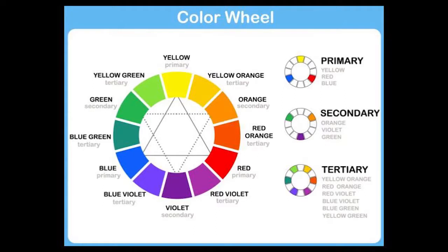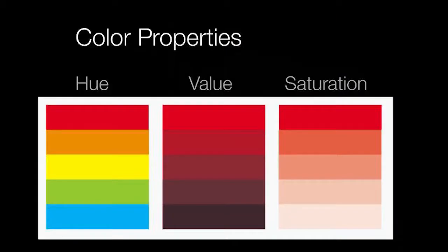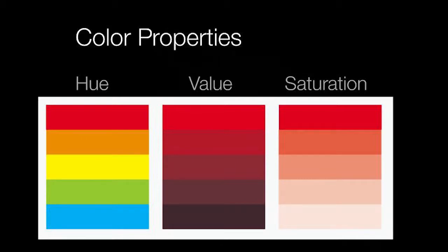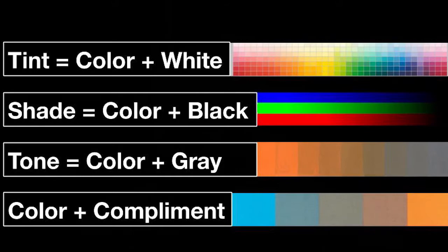Later those ideas were refined by various artists into the color wheel we all know and love. It basically gives a visual depiction of the relationship between colors. We have primary colors; we mix primary colors and we get secondary colors. When we mix primary and secondary colors together we get tertiary colors, and those are always named primary color first — think red-orange, not orange-red.